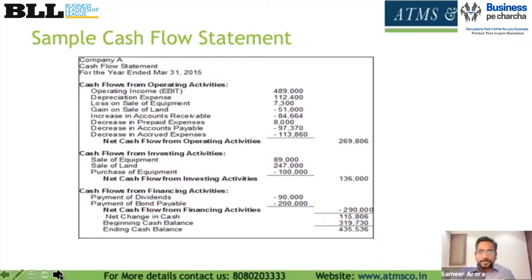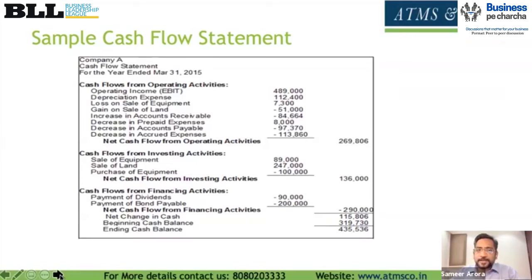Here is a simple example of how a cash flow statement looks. It starts from operating income — say a profit of 4 lakh 89,000. You add back non-cash or non-recurring items like depreciation, which is non-cash — there's no actual outgo of money when you record depreciation; purchasing machinery is an outflow but depreciation is not. After adding these back, we see a positive cash flow from operating activities of 2 lakh 69,000. Additionally, if we sold some equipment and land and bought new equipment, we generated 1 lakh 36,000 from investing activities.